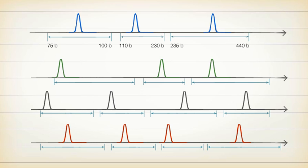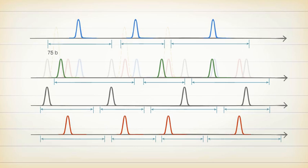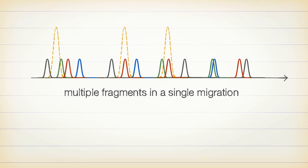With a genetic analyzer, multiple dyes can be detected at the same time, so you can use different dyes to label DNA fragments in similar size ranges. Being able to select a mix of fragment sizes and fluorescent labels allows a high level of multiplexing, letting you analyze multiple fragments in a single migration.